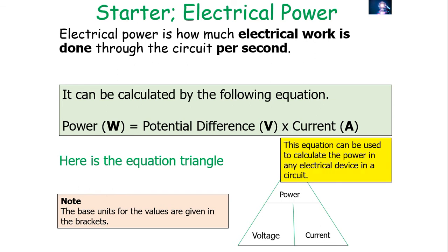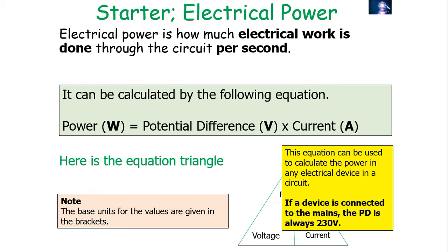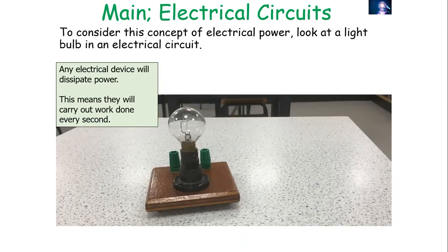This equation can be used for any electrical device in a circuit. Also remember that when a device is connected to the mains plug socket, the potential difference is always 230 volts — that's a value you must memorise. Because the potential difference is fixed at 230 V, different devices draw different currents to achieve different power ratings. The potential difference for every device plugged into the mains is always 230 volts.